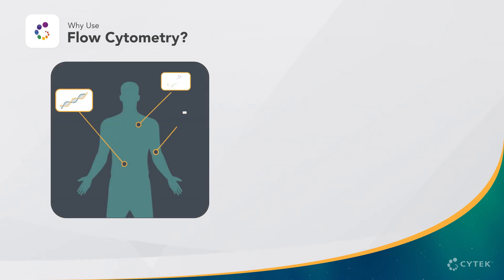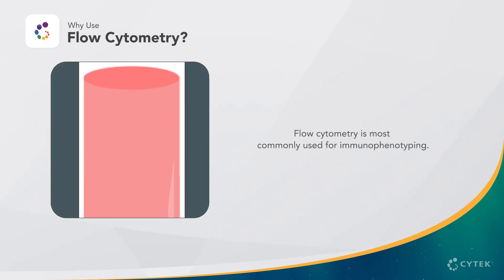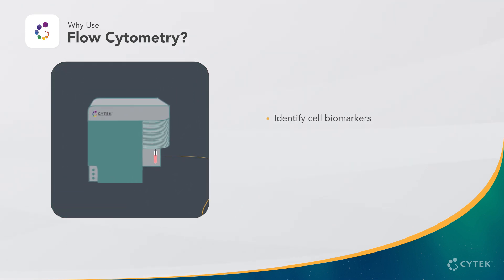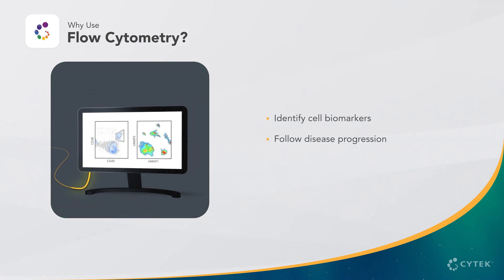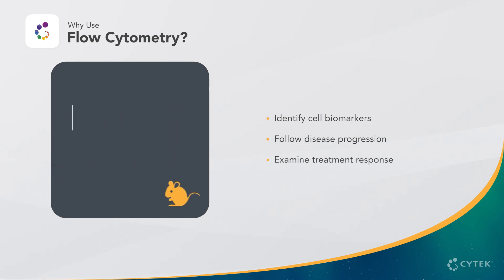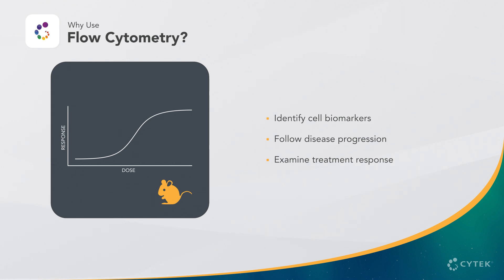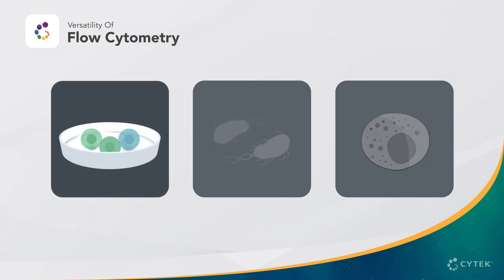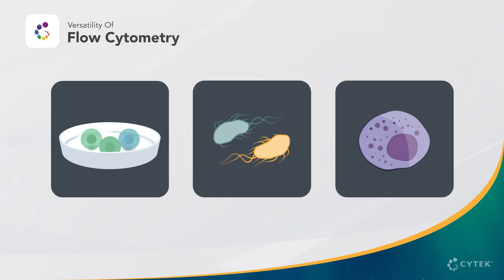A critical tool for both research and clinical applications, flow cytometry is most commonly used for immunophenotyping, in which one can identify cell biomarkers, follow disease progression, or examine treatment response in fields such as immuno-oncology or infectious disease. The versatility of this technology extends beyond the analysis of immune cells to include samples such as engineered cell lines, bacteria, and even subcellular particles such as exosomes.